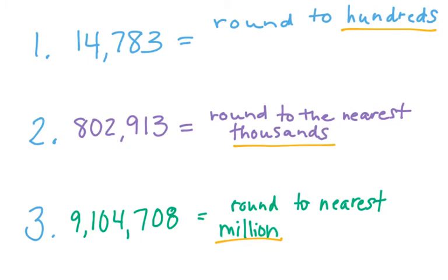All right, when you round the first one to the nearest hundreds, I look at the number in the hundreds place. Look one to the right, five or more, raise the score, four or less, let it rest. So rounded to the nearest hundred is 14,800.